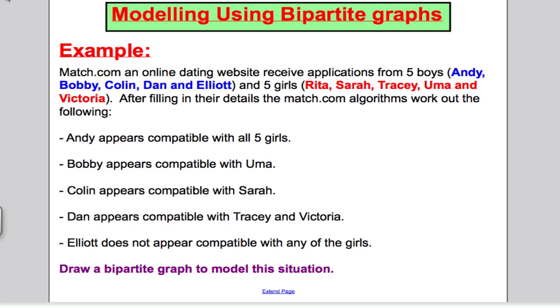Andy, lucky boy, seems to be compatible with all five of the girls. Bobby appears compatible with just Uma. Colin appears compatible with just Sarah. Dan appears compatible with Tracy and Victoria. And poor old Elliot doesn't appear compatible with any of the girls. A typical question would be to draw a bipartite graph to model this situation. I want to break it down and show you how we might do this.